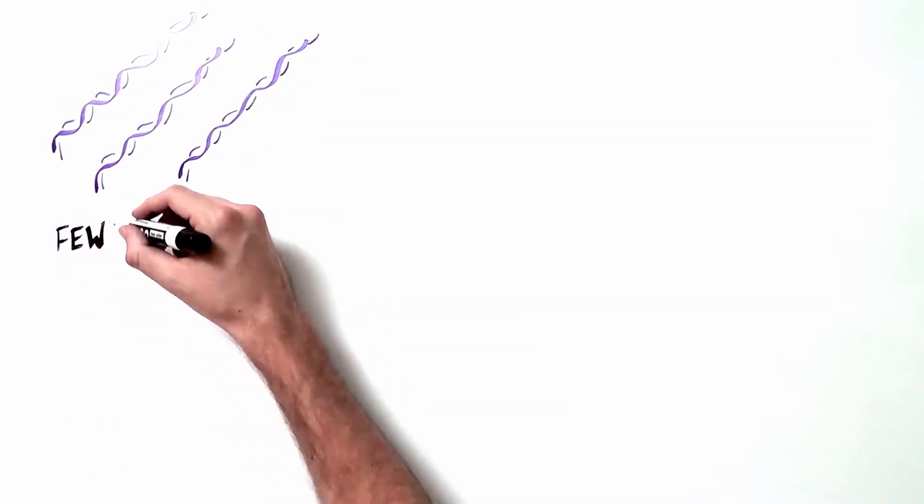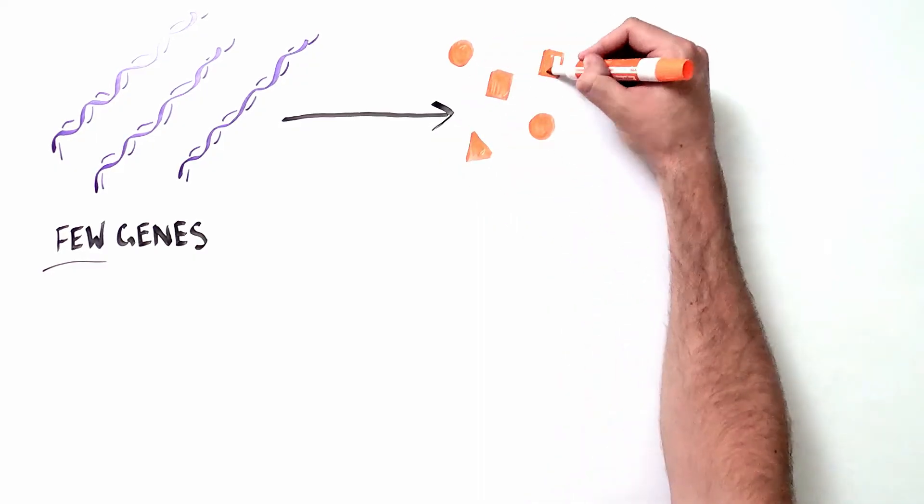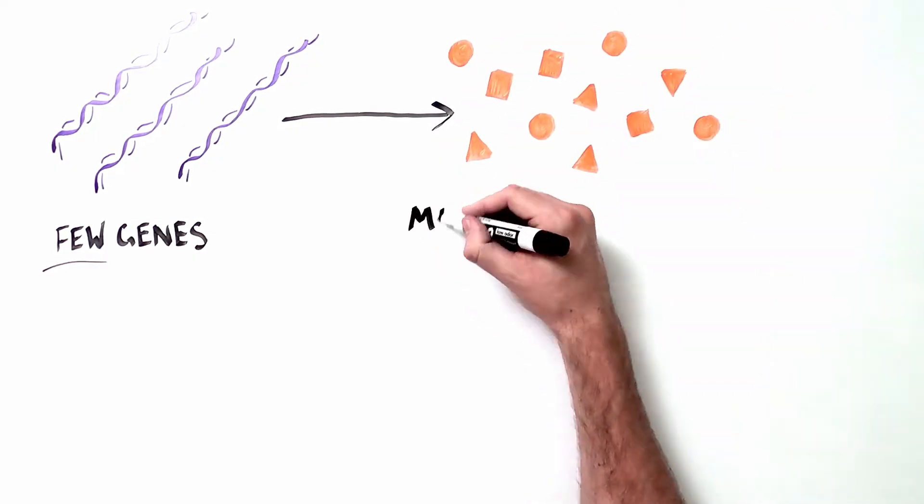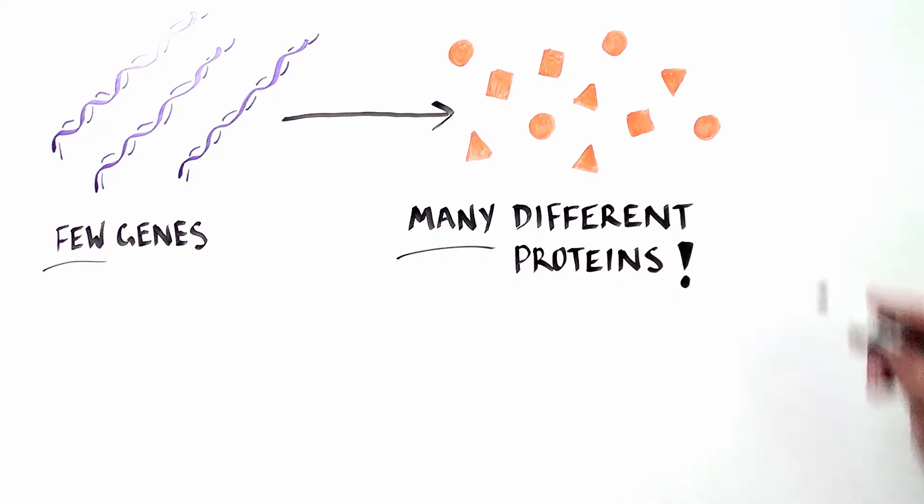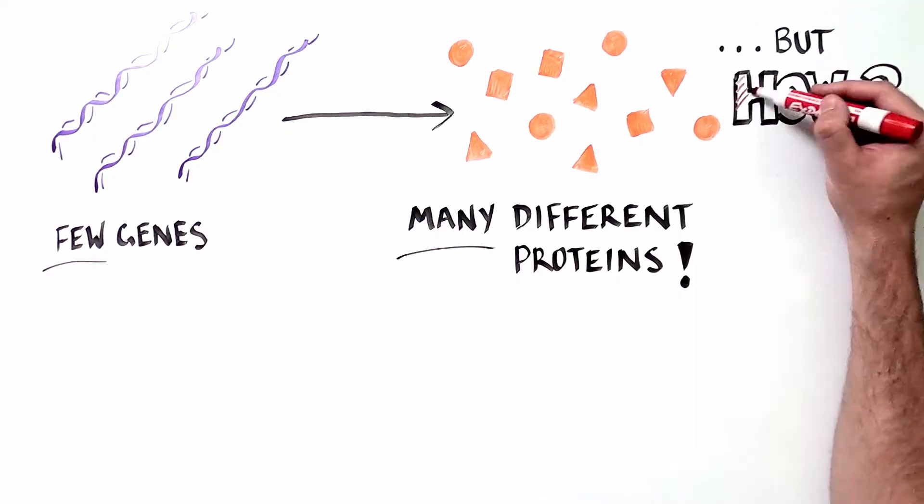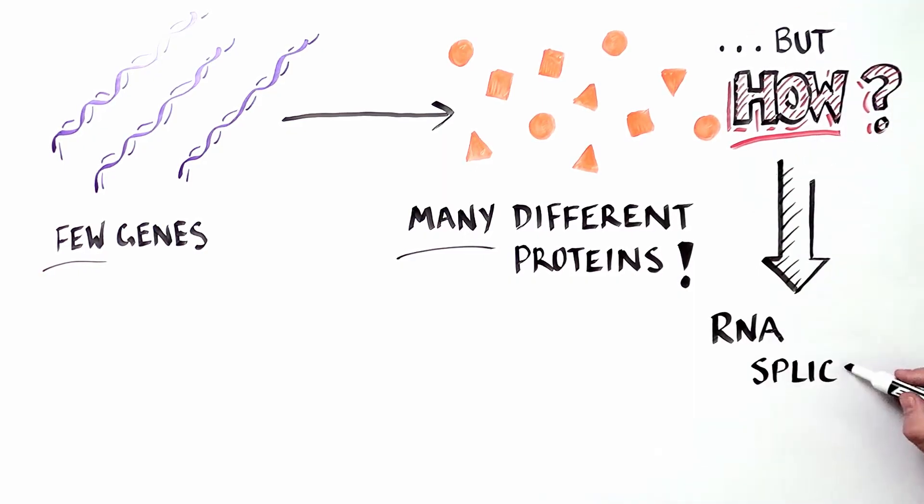How is it that such a small number of genes can provide directions for making at least 12 times as many different proteins? The answer lies in a very clever mechanism that nature has evolved called RNA splicing.